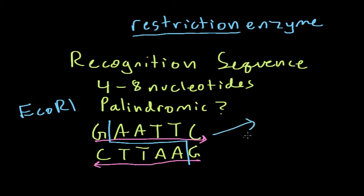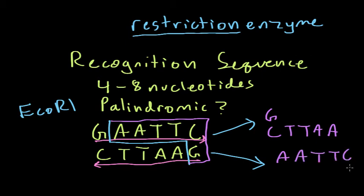And that results in two pieces of DNA floating around in the cell. The first piece looks like this: G-C-T-T-A-A. And the second piece is this guy over here: A-A-T-T-C and G. So these two pieces will be floating around the cell.